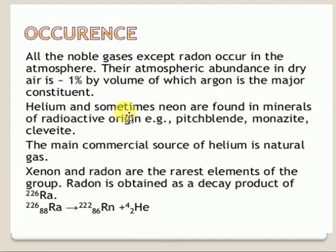Helium and sometimes Neon are also found in minerals of radioactive origins. For example, if you go for pitchblende ore, you will find Helium and Neon in that ore.